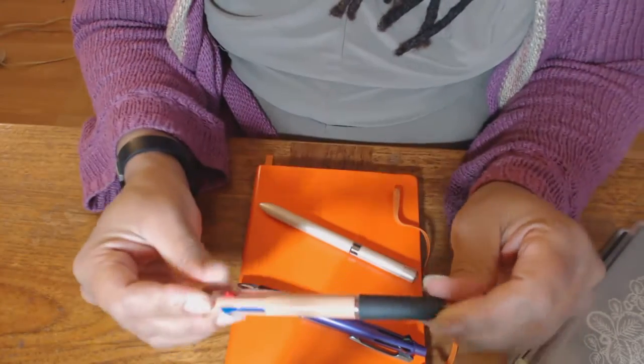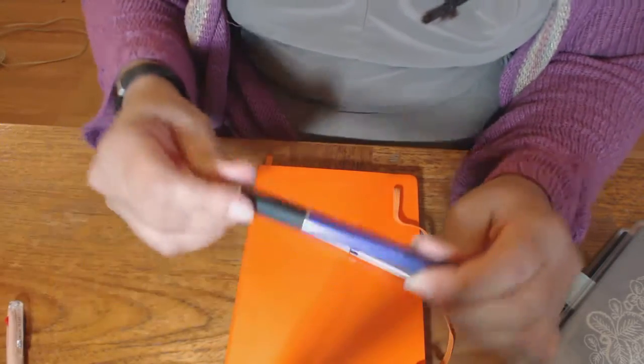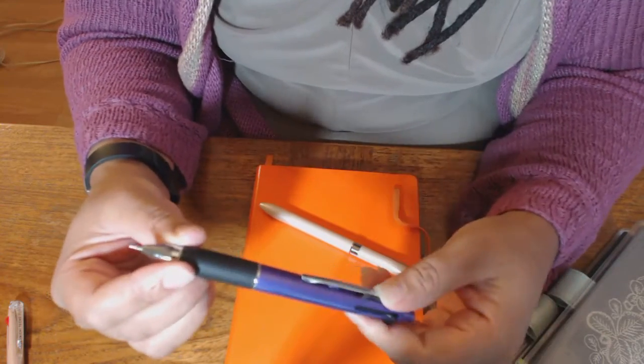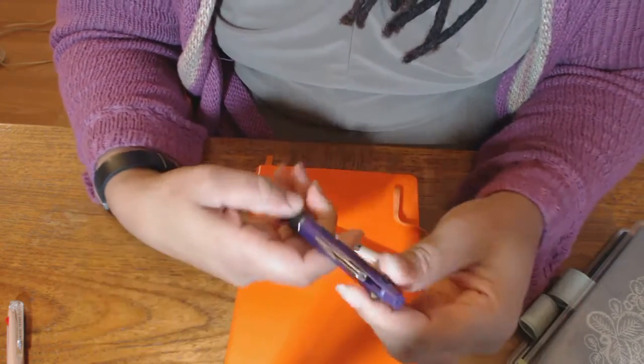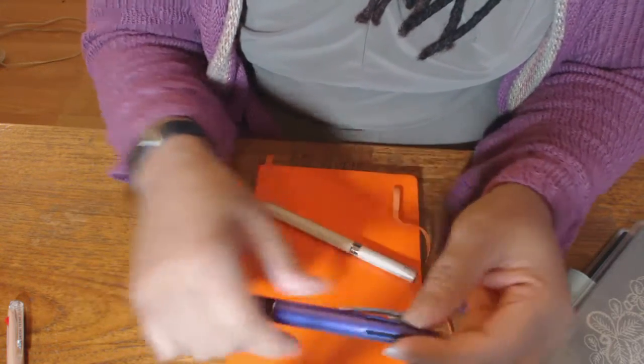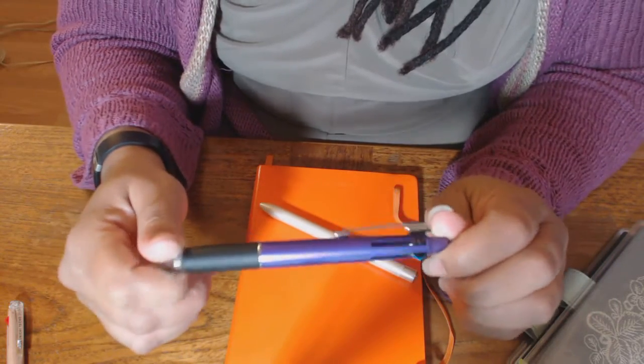So I went from this pen, which is three inks. It's got red, blue, and black to this one. It's a little bit heavier. It has more than one ink and it has a pencil. And this was my, oh my goodness, I can't use a fountain pen pen for about six months. This one has red, green, blue, and black.